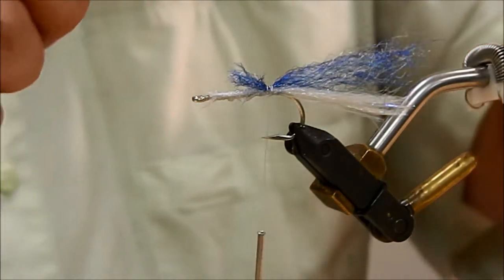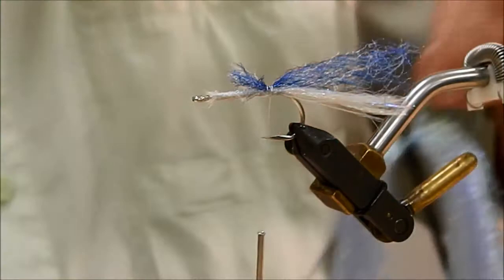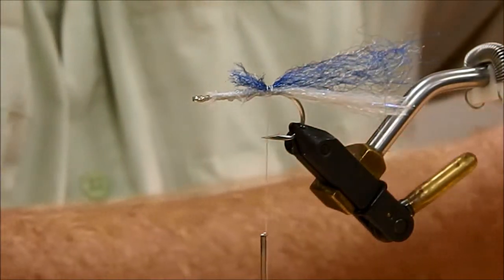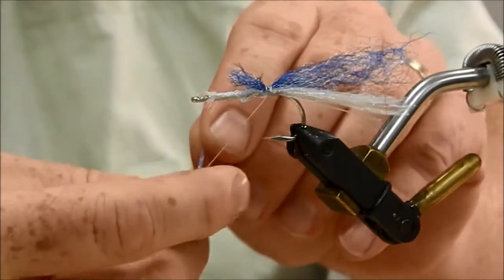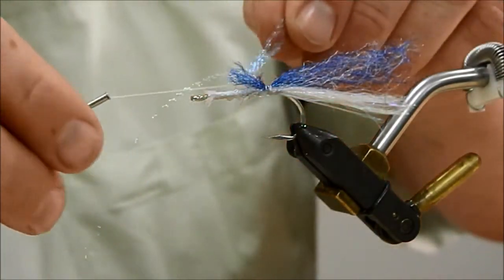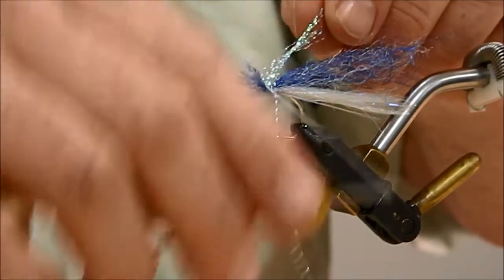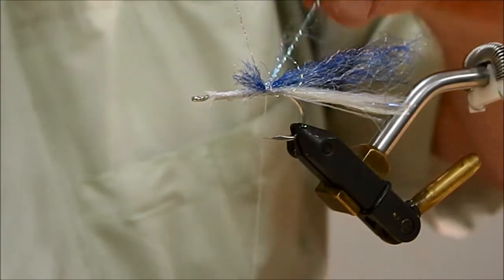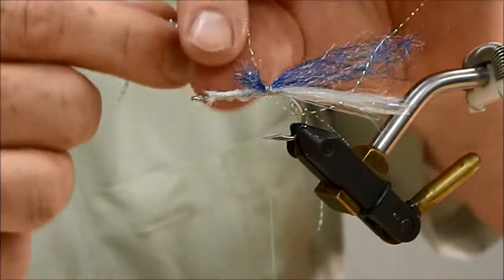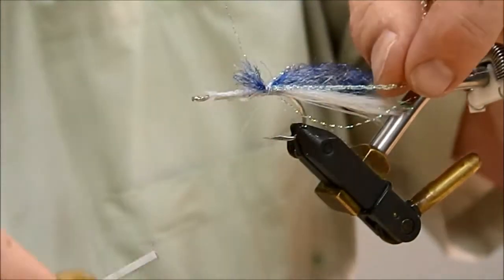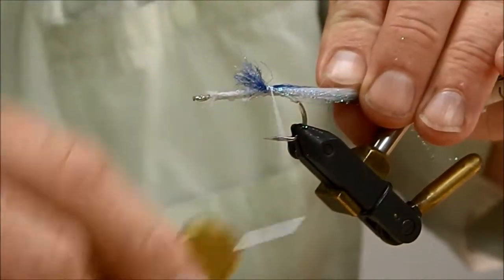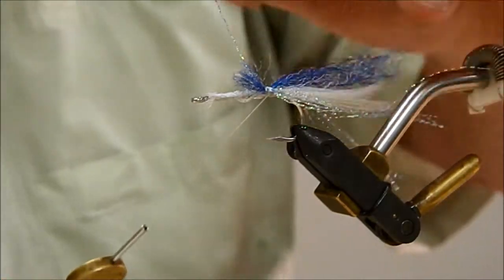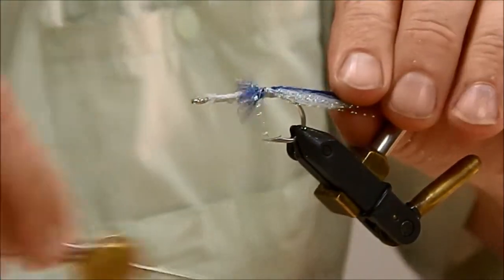This is blue crystal flash. We'll take a good piece of it. Go around your thread, lay it in here on the side. I'll take the other half, lay it over so it falls down on the side. That way, in the water the fish can see it, rather than if it's on top.